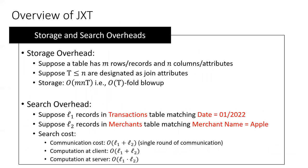In terms of such overheads, JXT incurs a linear communication overhead and linear computation overheads at the client, while outsourcing the heavy quadratic computational overheads to the server.